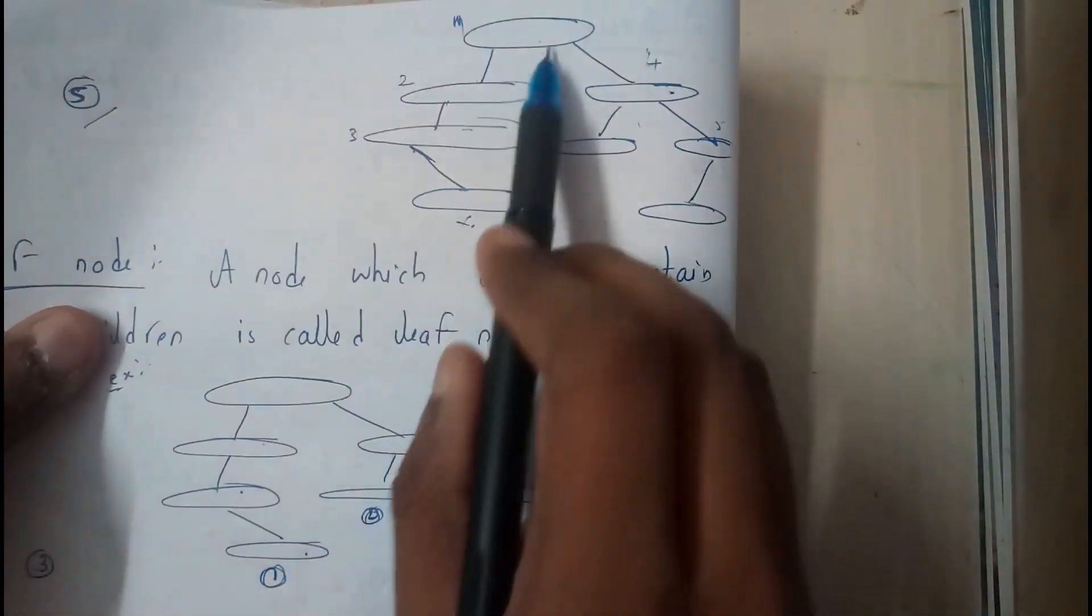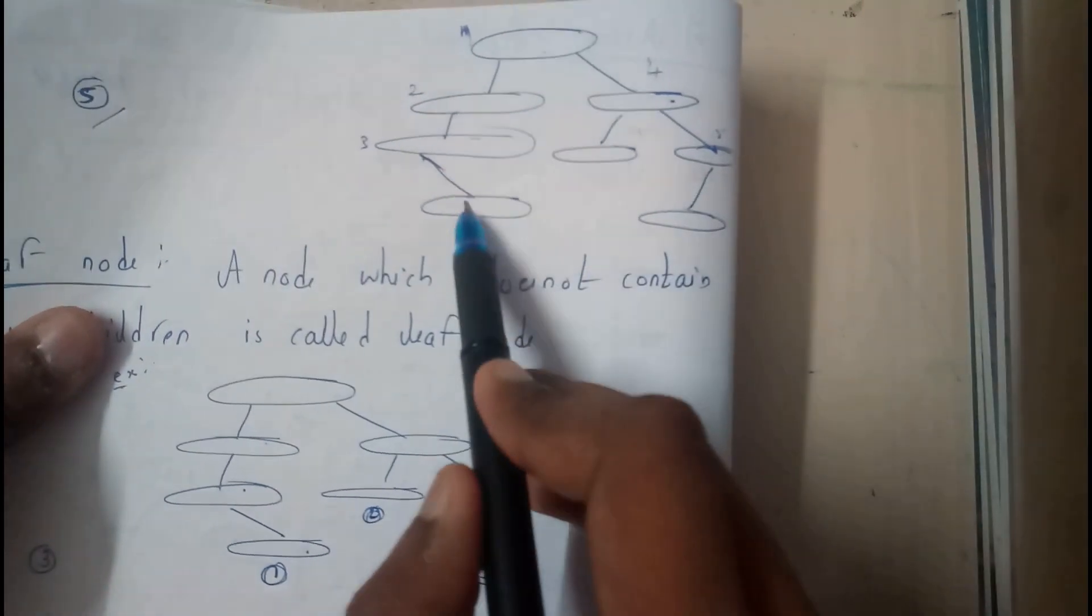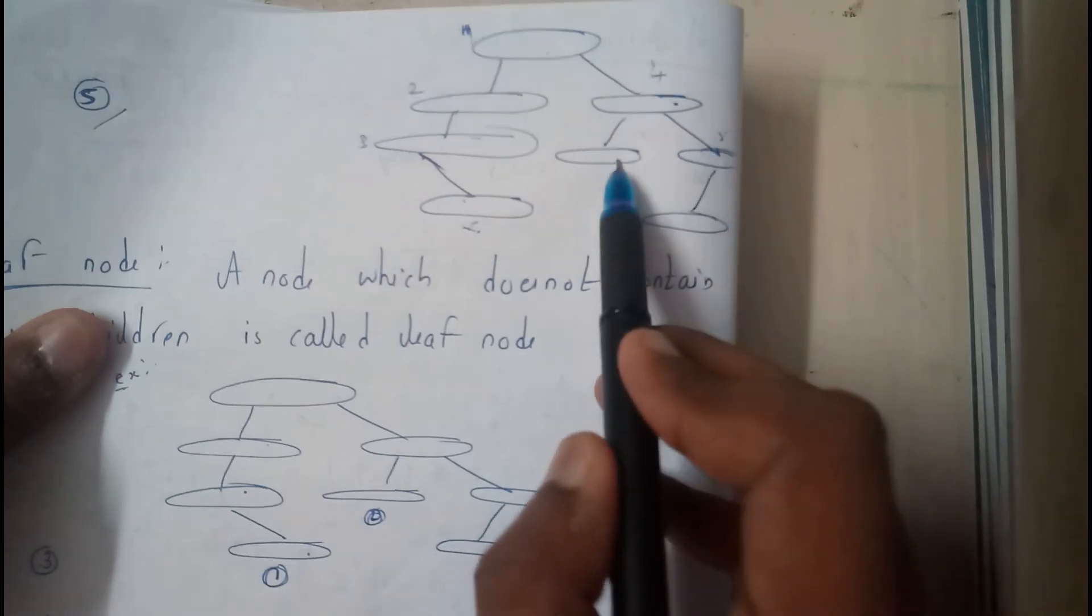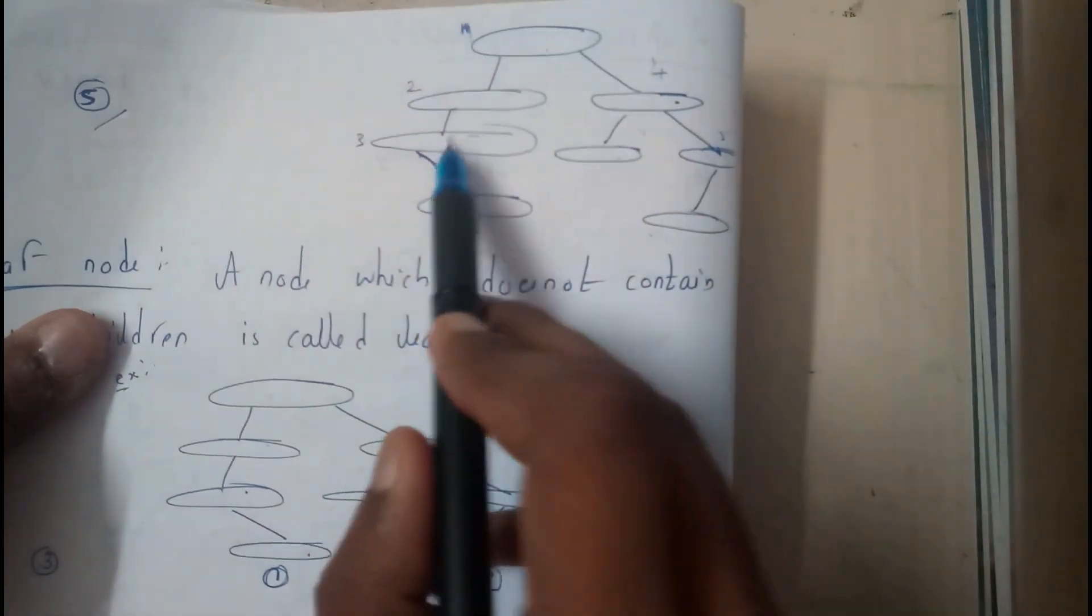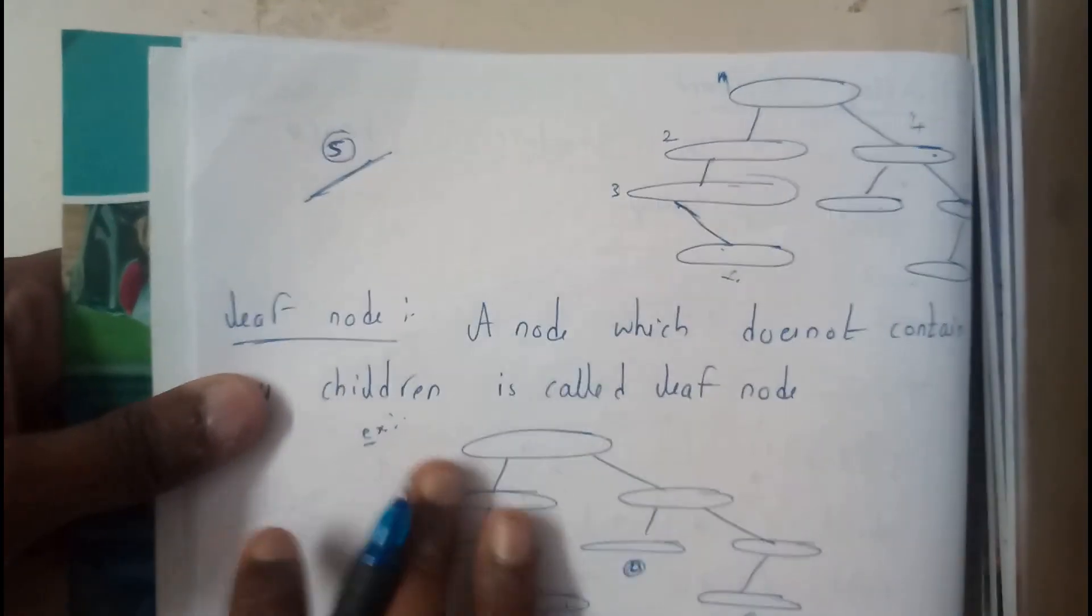So here we got few children, here we got few children. So this has one children, two, one children, one children, one no children, one children no children, one children no children. So one, two, three, four, five. So we got five internal nodes for this graph.